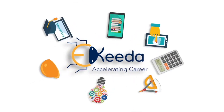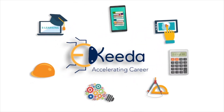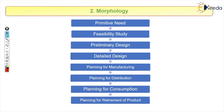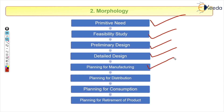In this video we will study about morphology. In the last video we studied about methodology, and now we are going to move to the next step: morphology. Morphology can be represented as a flowchart. It starts with primitive design, then feasibility study, preliminary design, detail design, planning for manufacturing, planning for distribution, planning for consumption, and finally planning for retirement of the product.